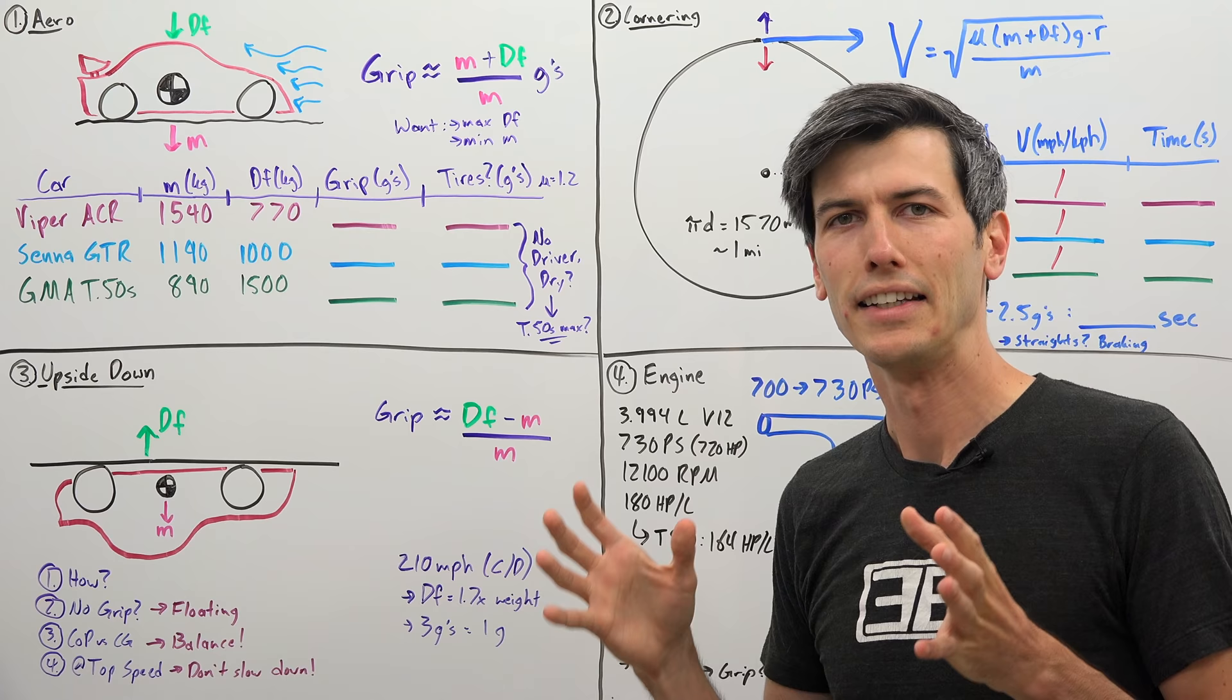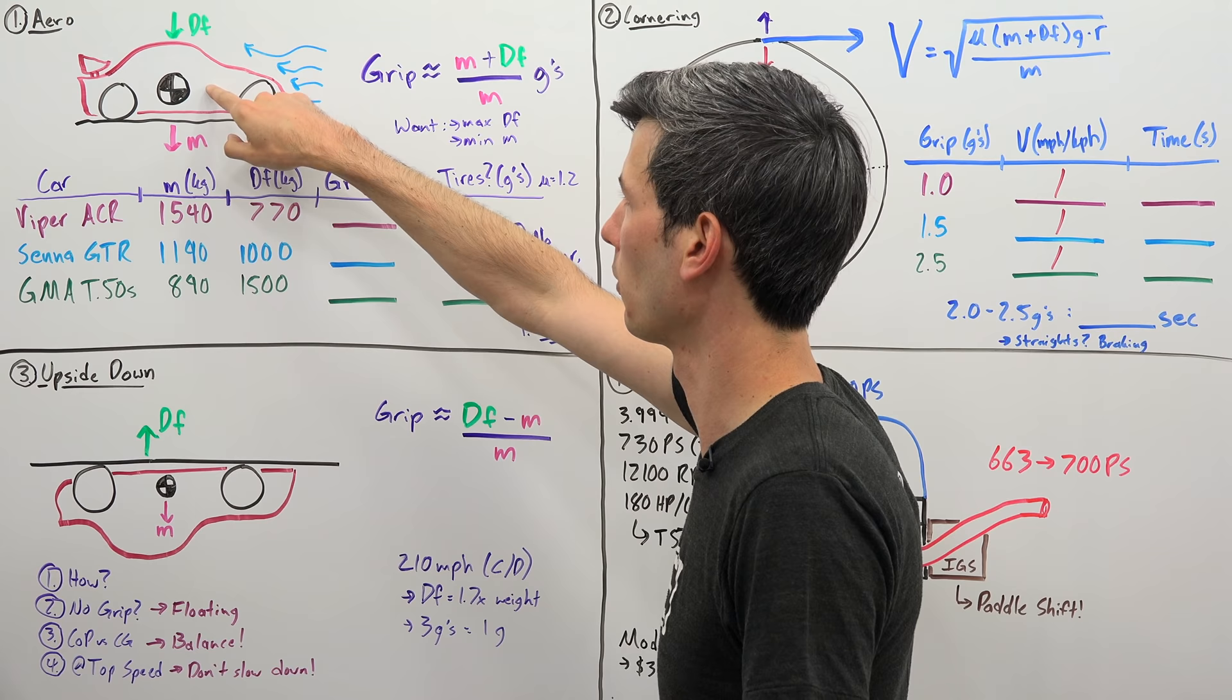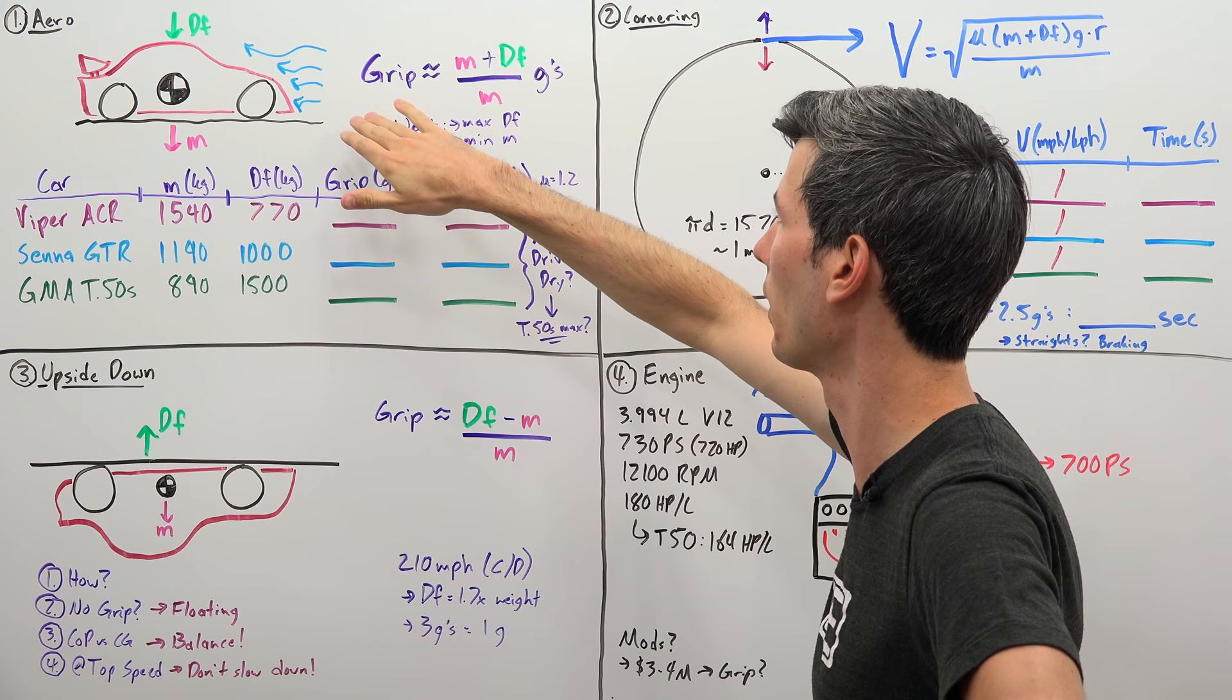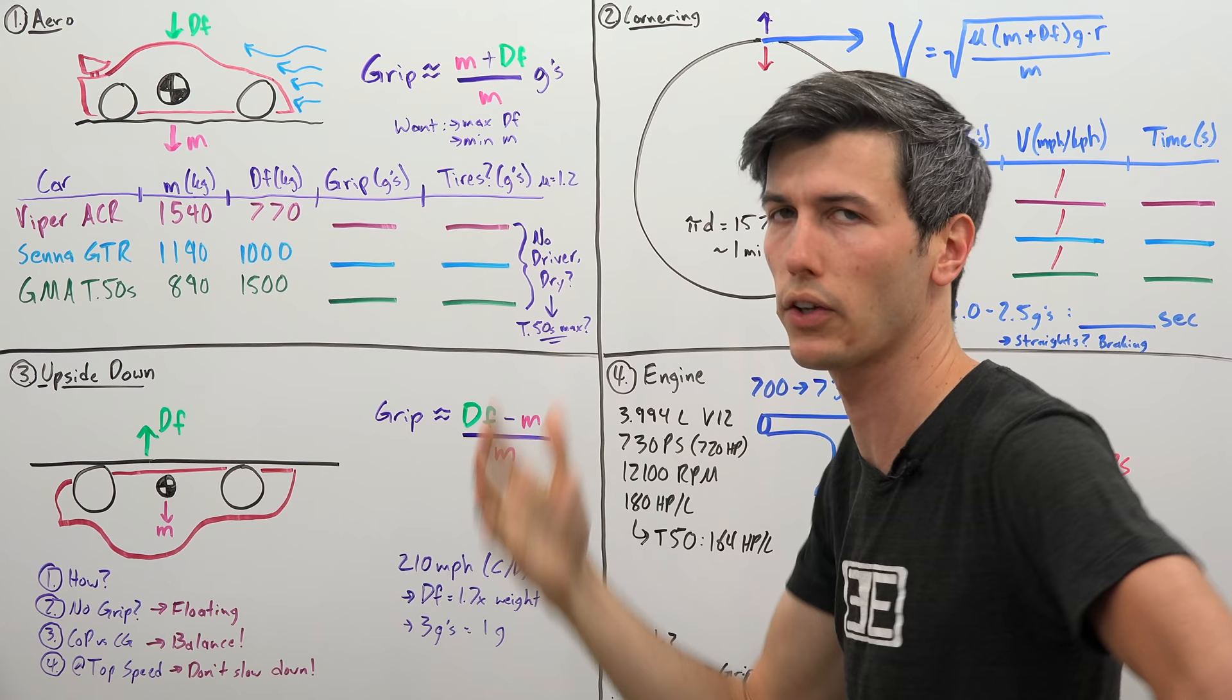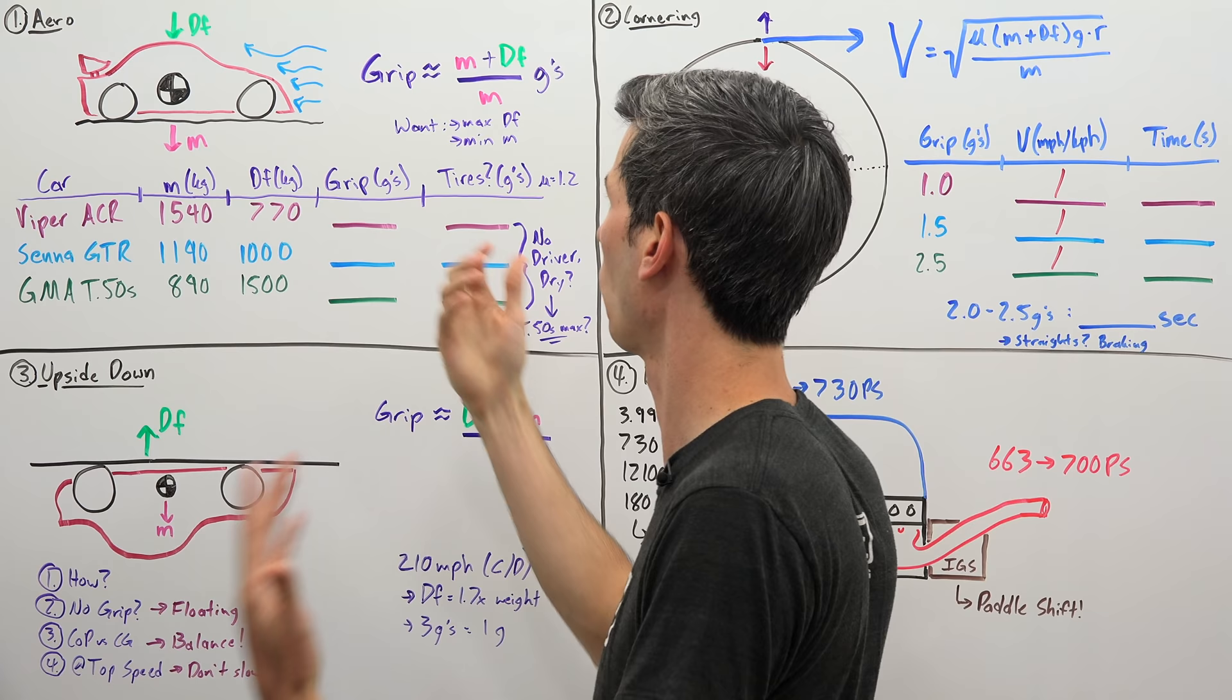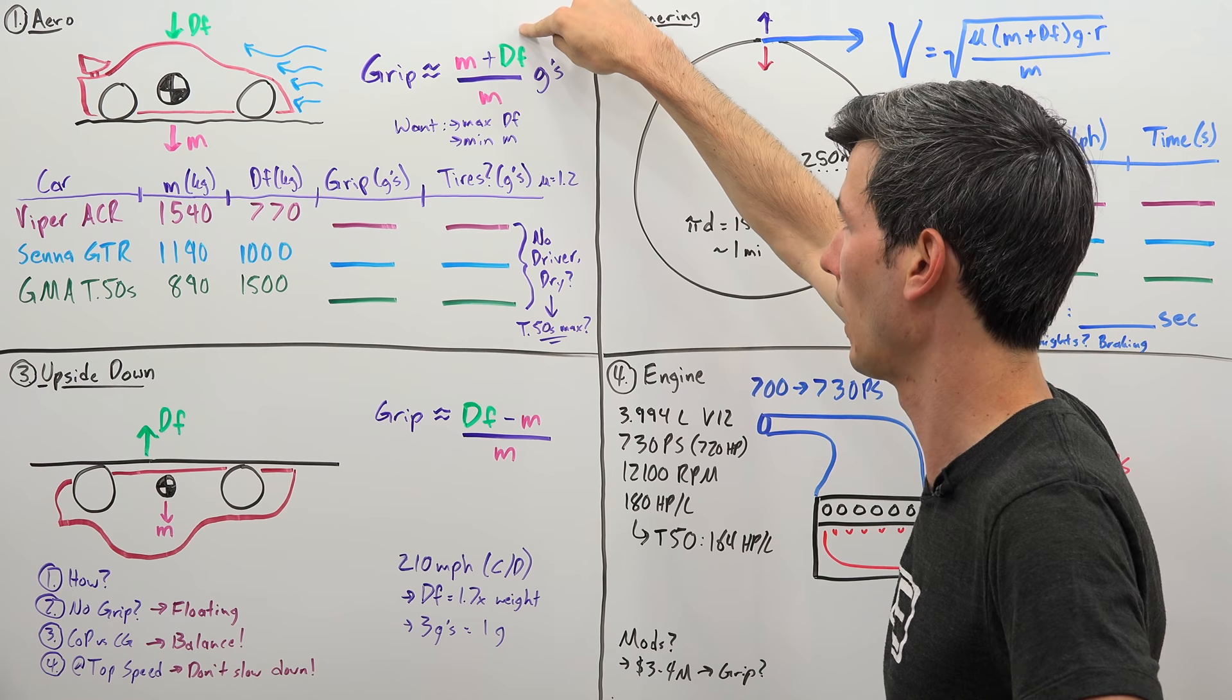That's what this T50s is going for, and we're going to use the road car benchmark of the Viper ACR to demonstrate how absurd this T50s is. As far as a simple discussion about grip, we have our car driving along with a certain mass and downforce. We can think of our grip in terms of G's—the lateral grip the car will be able to sustain—as mass plus downforce divided by mass.